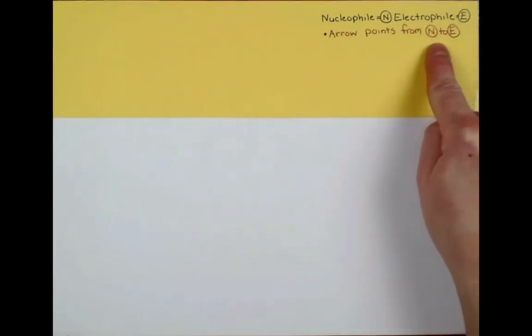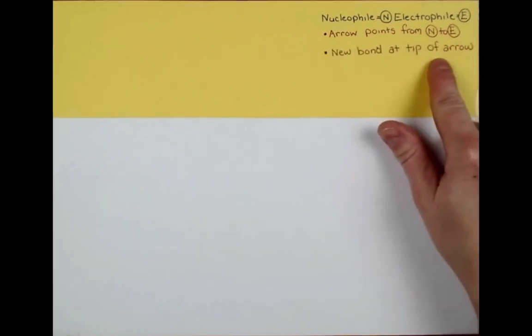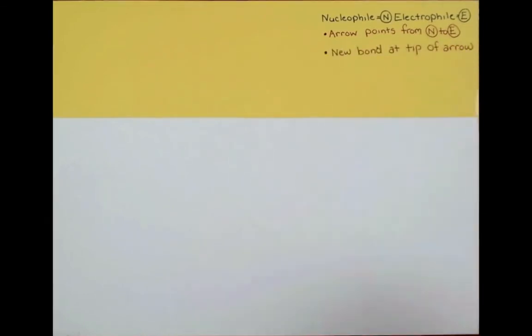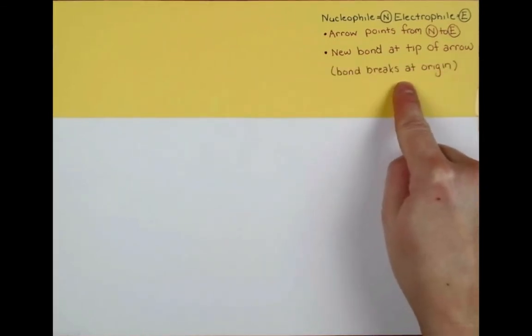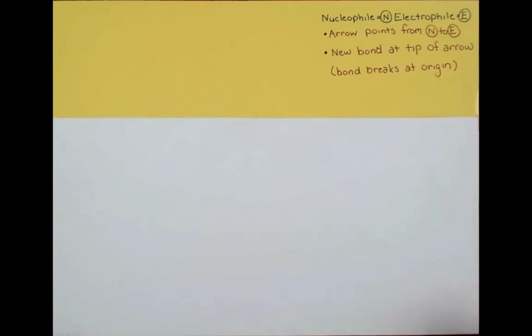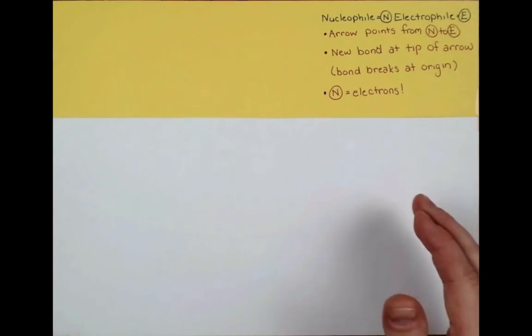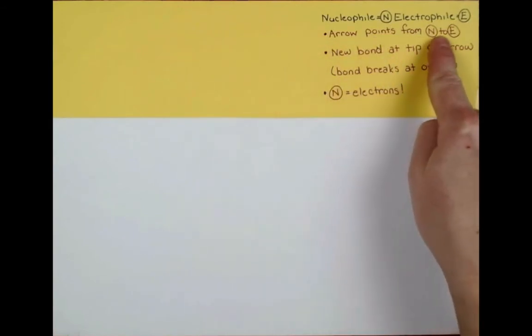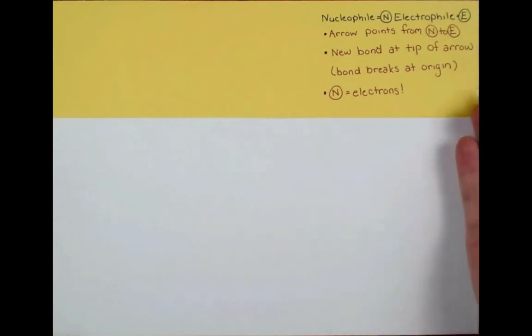Our first rule is that the arrow points from the nucleophile to the electrophile. The new bond forms at the tip of the arrow, so where the arrow points you're going to be drawing your new bond, and where you start your arrow at the origin, that bond is going to break. Now it's important that our nucleophile has extra electrons. The arrow is going to show where these electrons are moving, that's why it comes from the nucleophile and points to the electrophile.